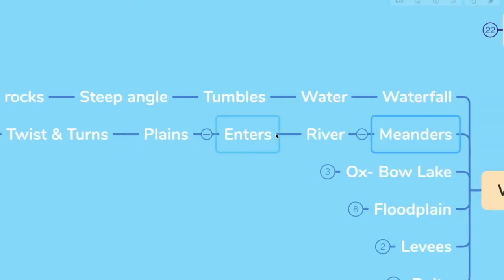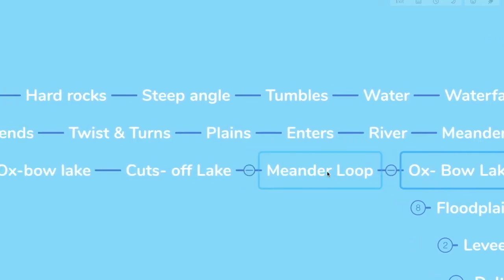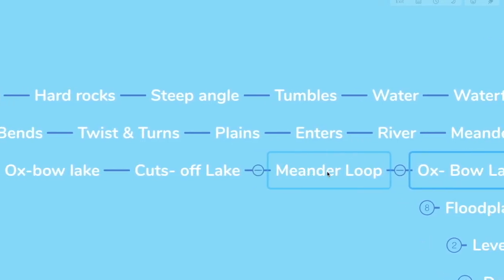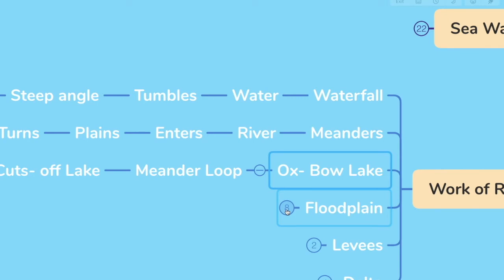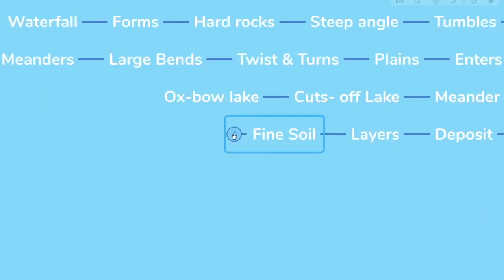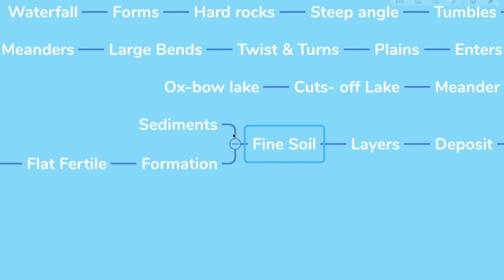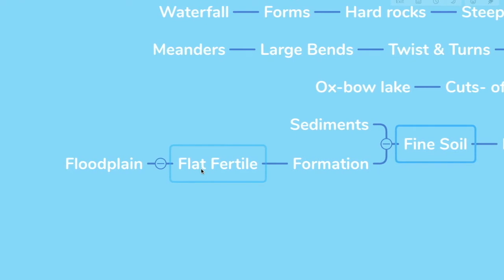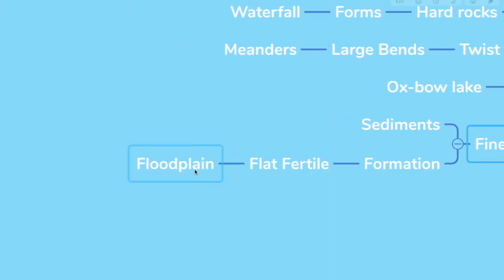Let's see what are Oxbow Lake. Over a period of time, meander loops cut off from the river to form a cutoff lake, a separate lake, which are also called Oxbow Lake. Next, we have floodplain. Now, when flood takes place, it deposits layers of fine soil and other materials called sediments. This leads to the formation of flat fertile floodplain.